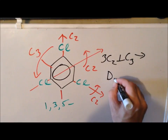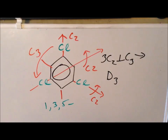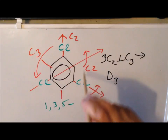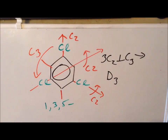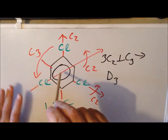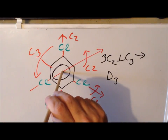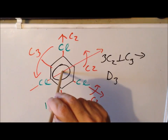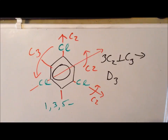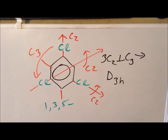The element we need to definitively determine the point group is a mirror. This compound is completely planar, so there is a mirror plane in the plane of the board — perpendicular, or normal, to the high-order C3 rotation axis. That gives us the point group D3h. Going from 1,2,3 to 1,2,4 to 1,3,5 trichlorobenzene, each tri-substitution pattern yields a different point group assignment.